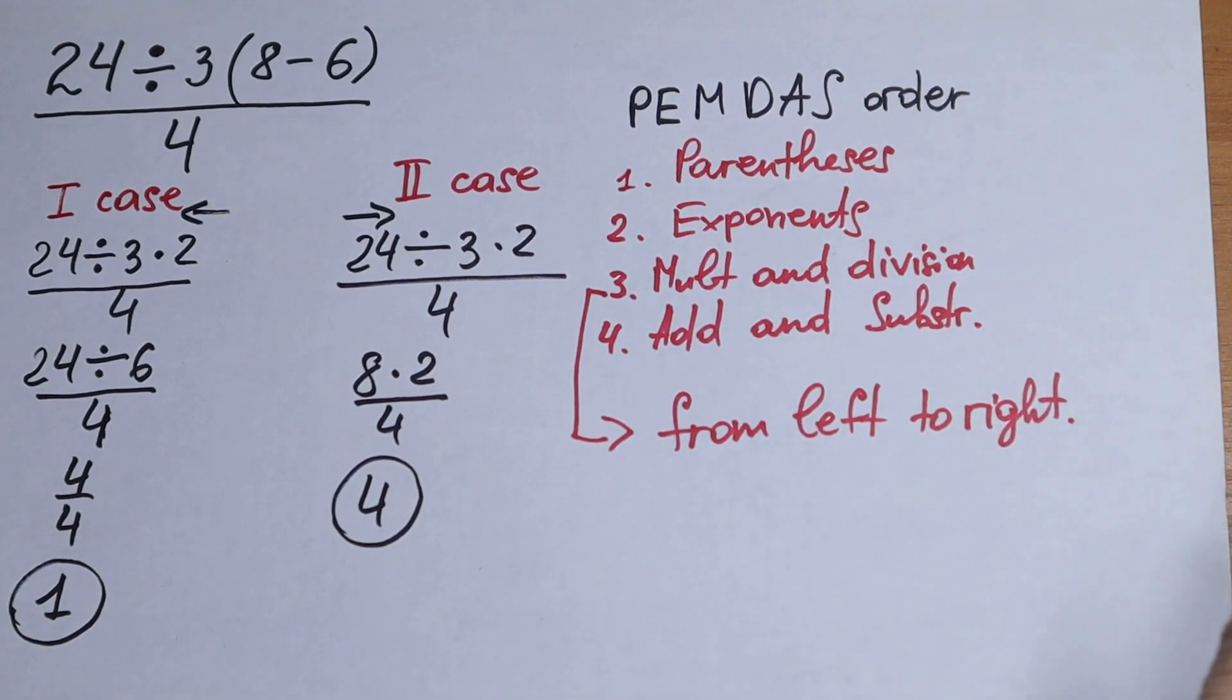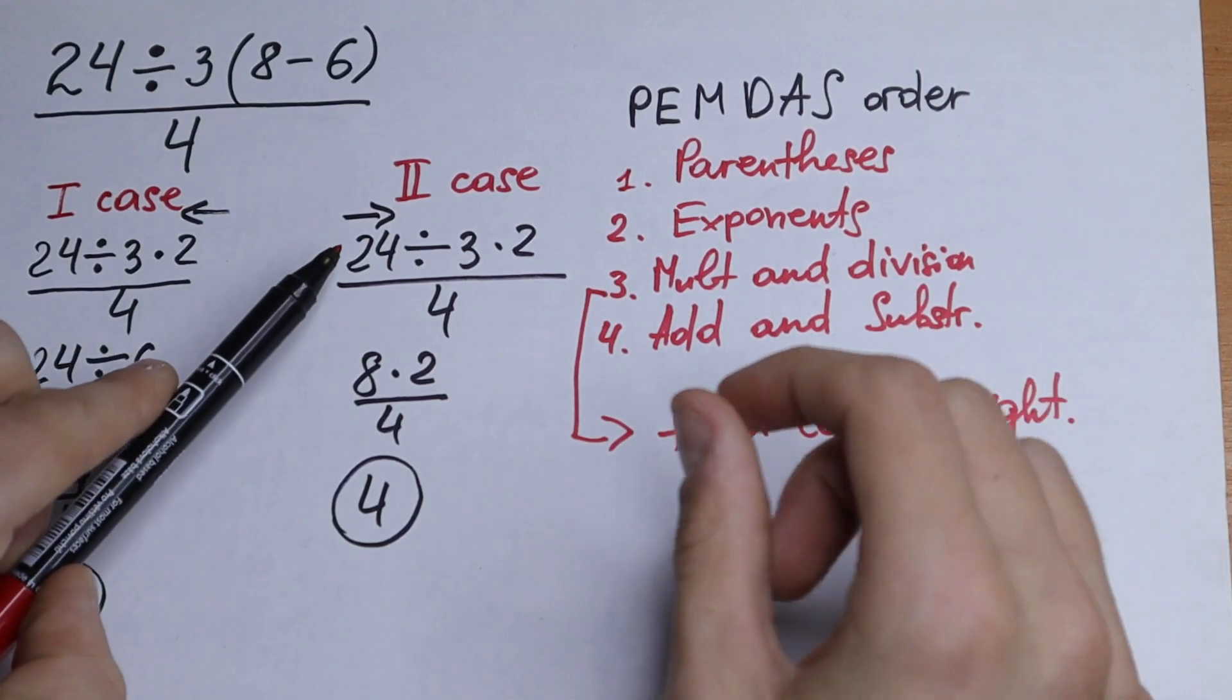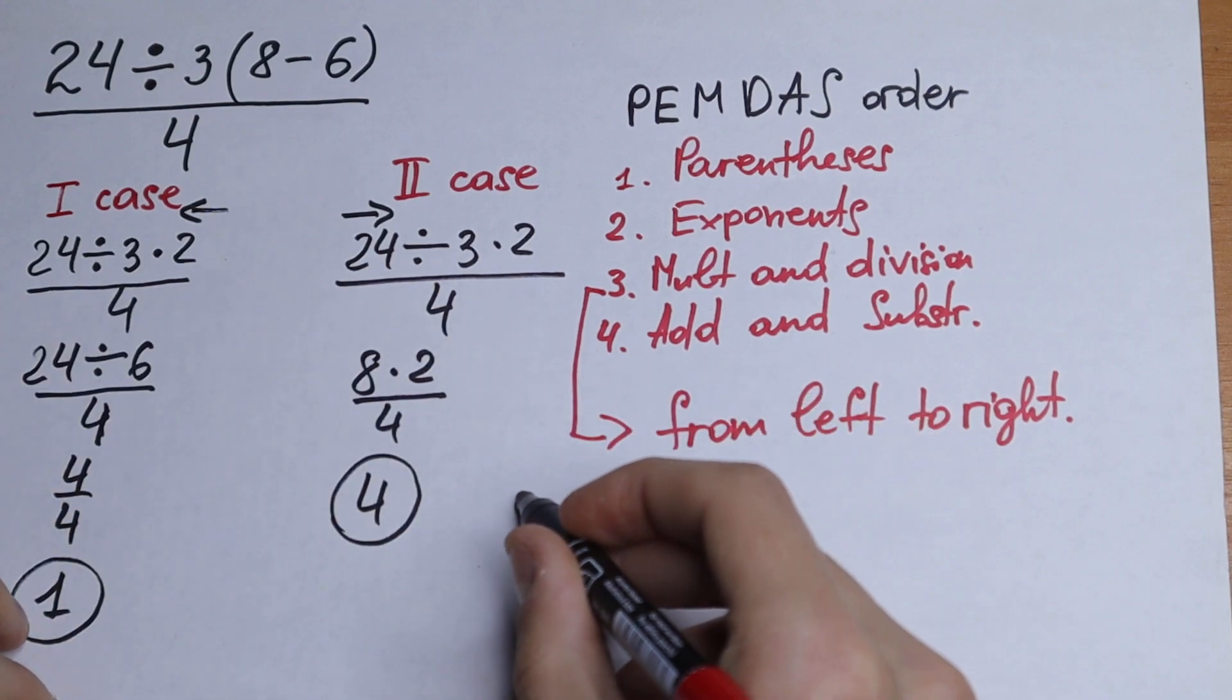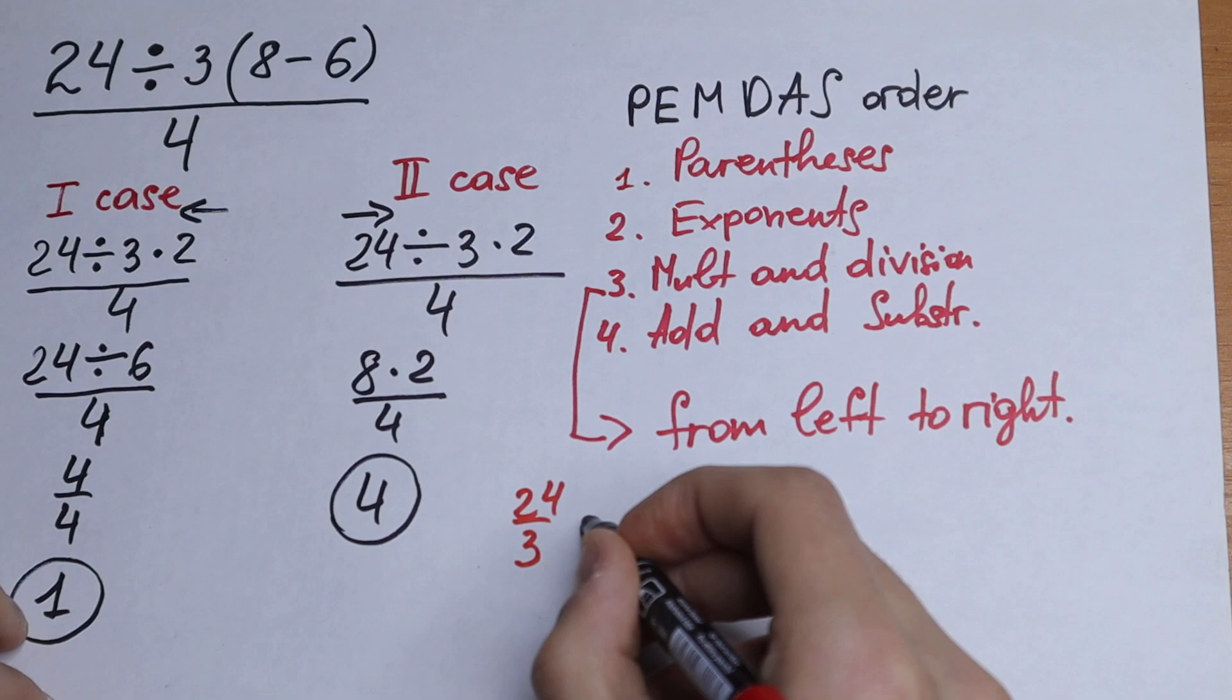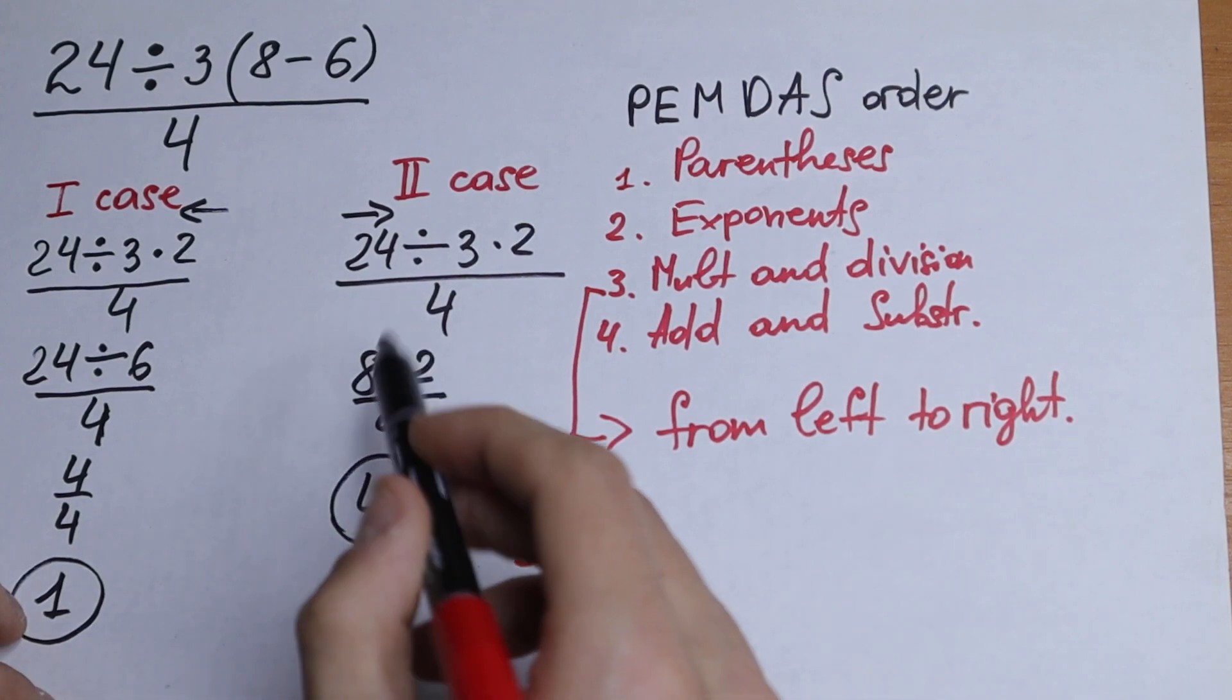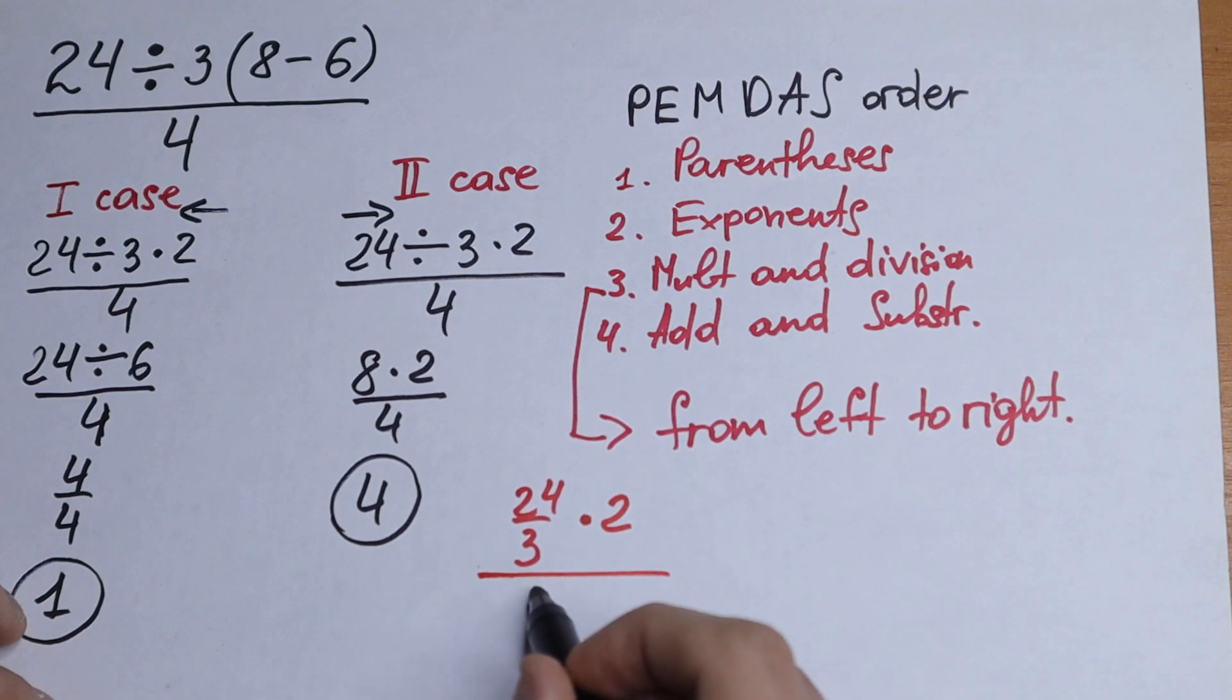Moreover, I want to show you a real quick trick right here. Because 24 divided by 3 we can write as 24 over 3 and times 2. Nothing changed, just write in a fraction way. Over 4.